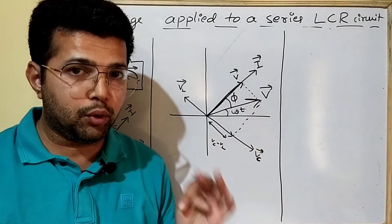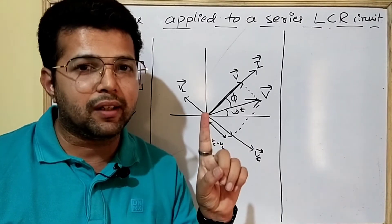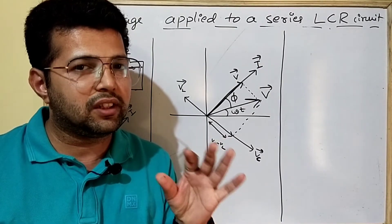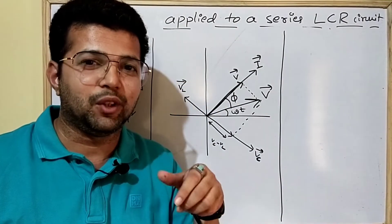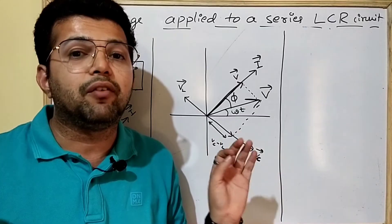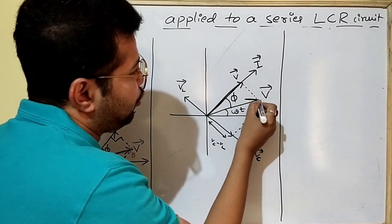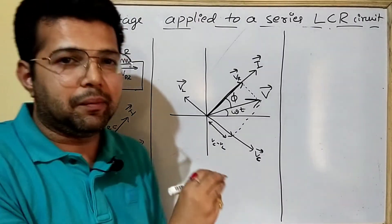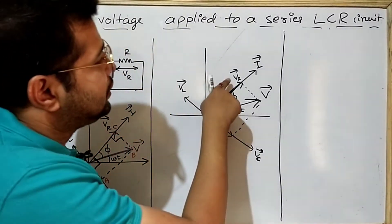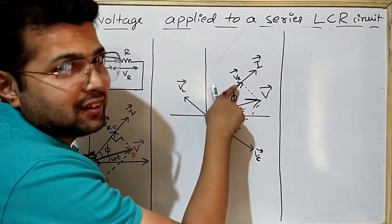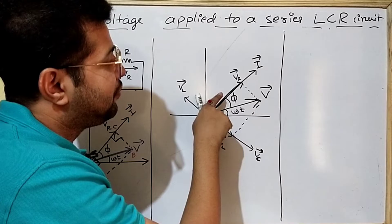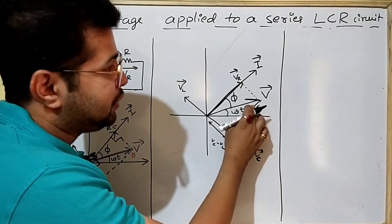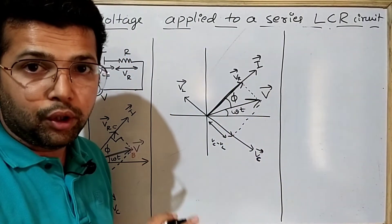In pure capacitive and pure inductive circuits, the phase difference was pi by 2, and in resistive circuit the phase difference is 0. Now with L, C, R together, when we apply AC, we have to calculate the phase difference. The voltage drop across the resistor VR has zero phase difference with the current. Using parallelogram law, we get the resultant voltage, with phase difference phi between resultant voltage and current. This is how you draw the diagram.